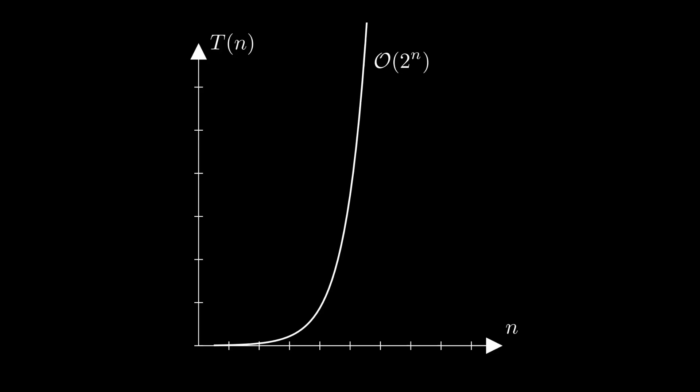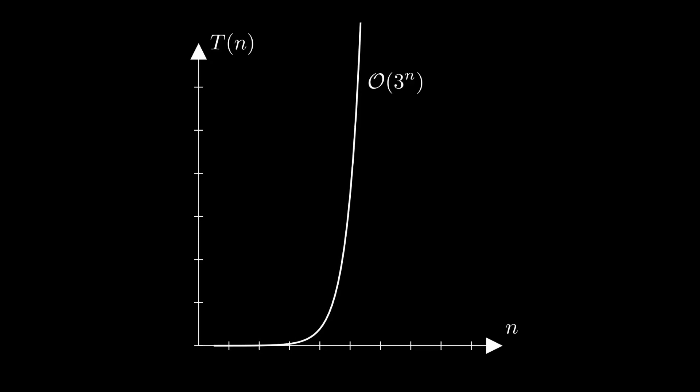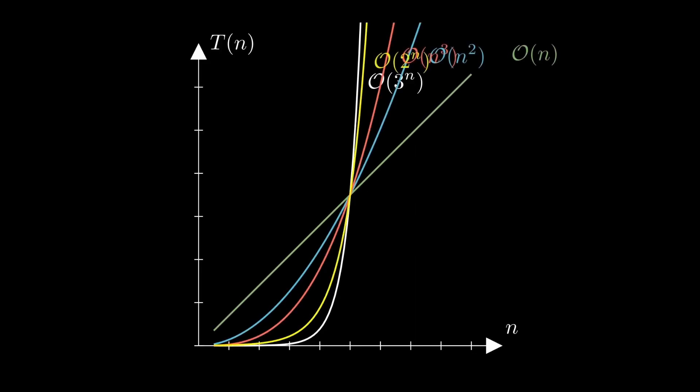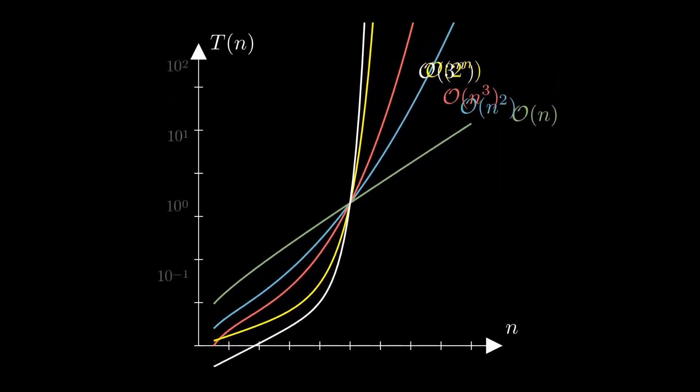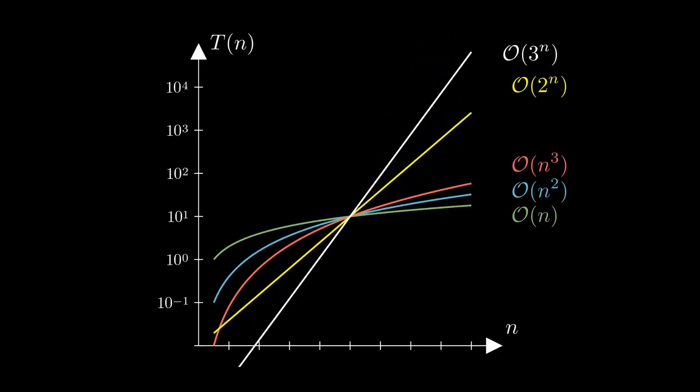By the way, 2 to the n is only one example for a whole class of exponential time complexities. Similarly, there is also 3 to the n, 4 to the n, or 1.5 to the n. One thing these all have in common is that they are worse than any polynomial time complexity like n, n squared, n cubed, and so on. Here I have compared polynomial running times and exponential running times. The best way to see the difference is if we switch to a logarithmic scaling — now the values become larger by a factor of 10 for every mark on the y-axis. In this representation, you can see that polynomial running times actually curve downwards at some point, whereas exponential running times keep growing more and more.